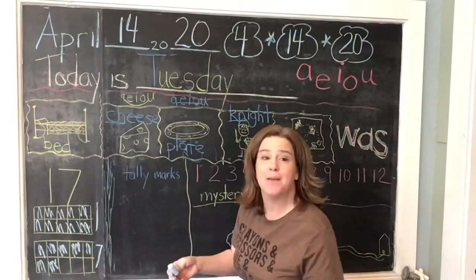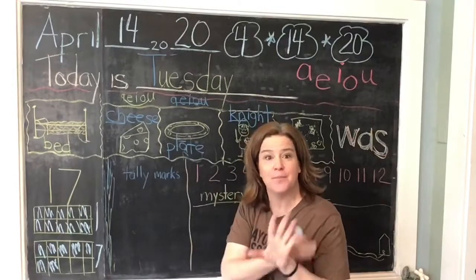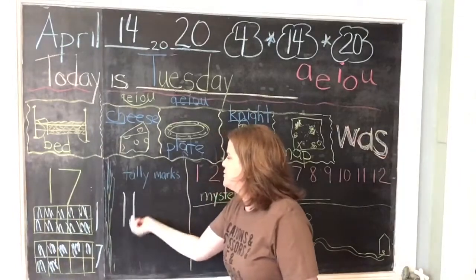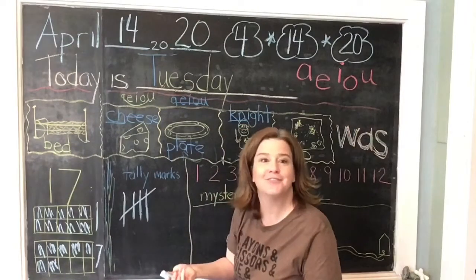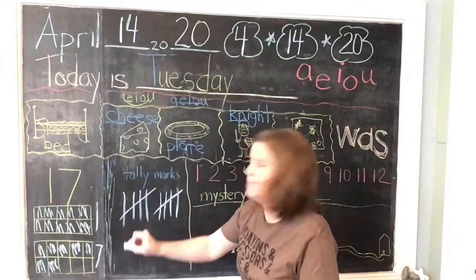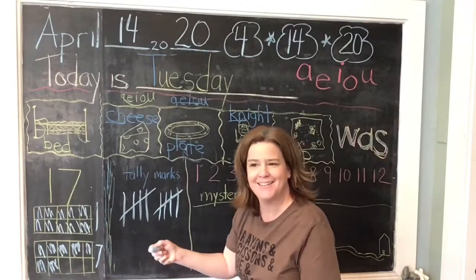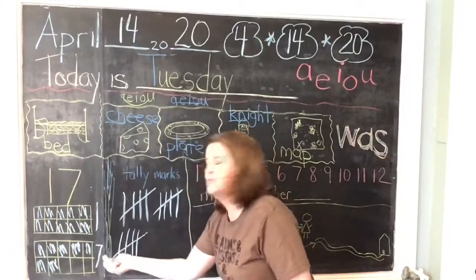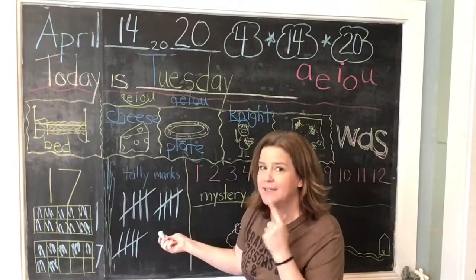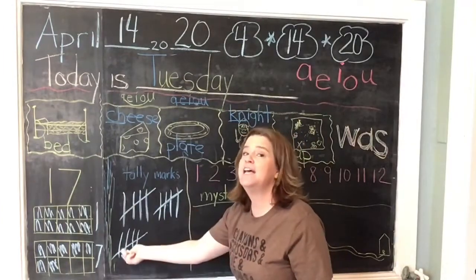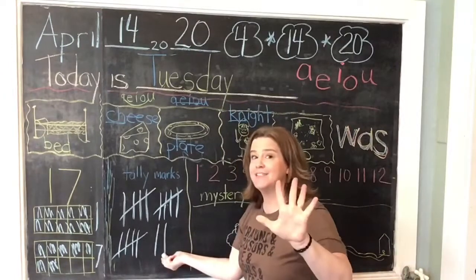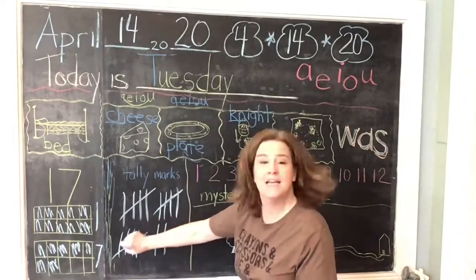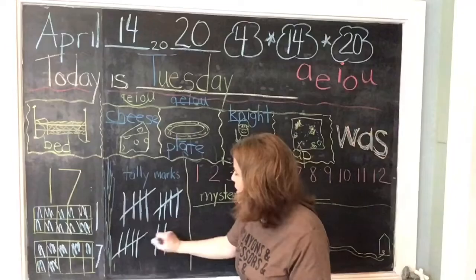Let's do some tally marks. Remember, we have four tally marks and we close it with number 5. We're making our tally marks for 17: 1, 2, 3, 4, number 5 — close the door. 6, 7, 8, 9, number 10 — close again. 11, 12, 13, 14, close it, 15. Keep going: 16, 17, stop! Let's count them: 5, 10, 15, 16, 17. My number is 17.